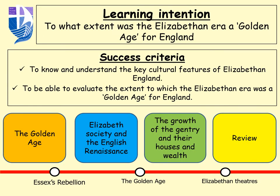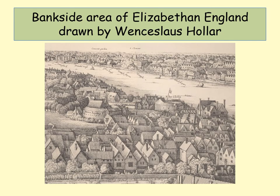We're going to look at Elizabethan society and what's called the English Renaissance. We're going to find out about the growth of the gentry and how they showed off their wealth, and then review that learning. Pause this any time if you need to go back over something.